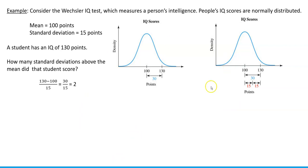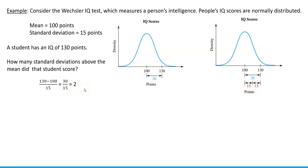If we don't have a picture, we can also calculate that algebraically. First, we find the difference by taking the actual score and subtracting the mean, which gives us 30. Then we see how many standard deviations fit in that number by dividing by the standard deviation. So if we take 30 and divide by 15 we get 2.